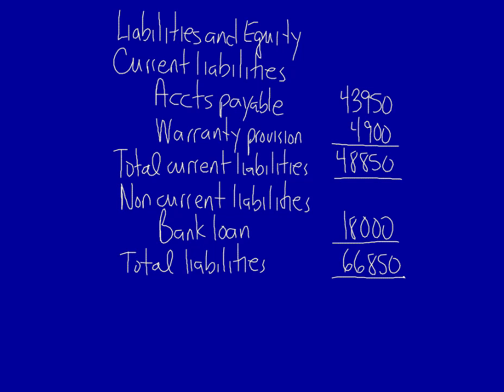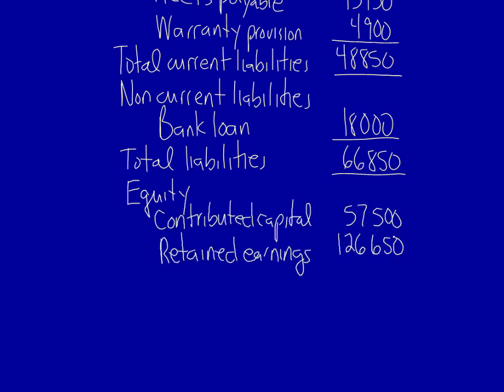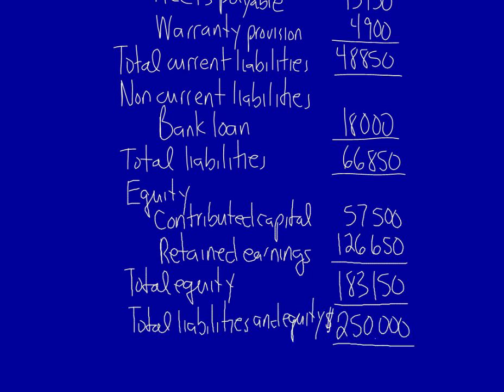Let's move on to equity. Remember that equity is the same amounts and the same order as on the statement of changes in equity: contributed capital, retained earnings, then total equity, and finally total liabilities and equity. That is the end of the statement of financial position. Unfortunately, I can't show you the whole statement altogether because the statement is too large.